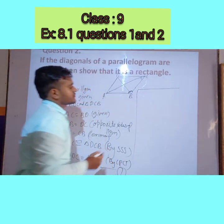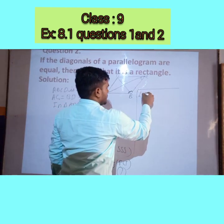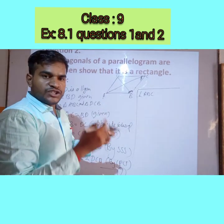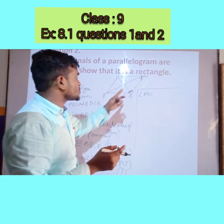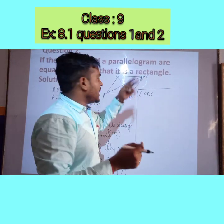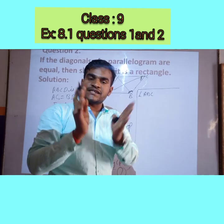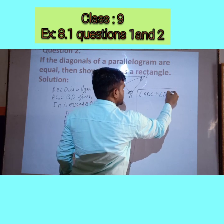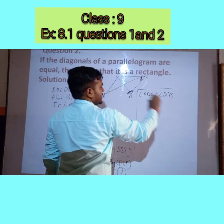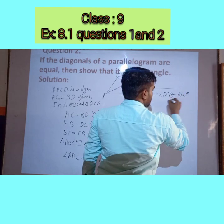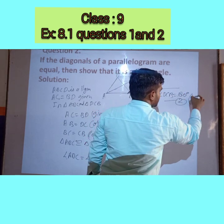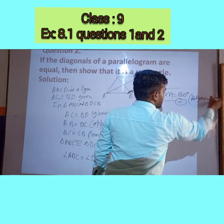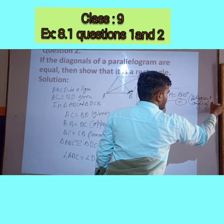Now, angle ABC and angle DCB are co-interior angles, or adjacent angles of a parallelogram. We know that adjacent angles of a parallelogram are supplementary, so angle ABC + angle DCB = 180°. This is equation number 2.